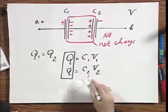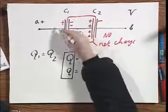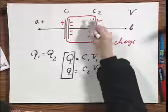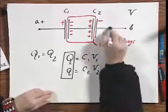And so now, as you can see, since C1 is not the same as C2, the potential difference over C1, which is V1, will be different from the potential difference over C2.